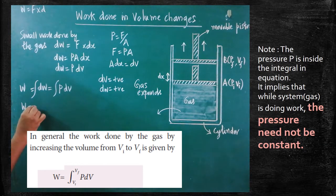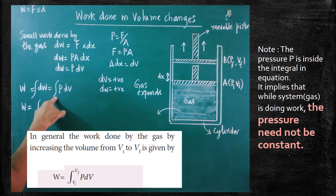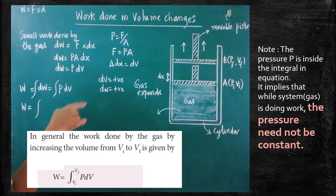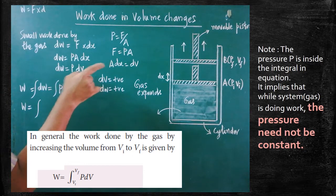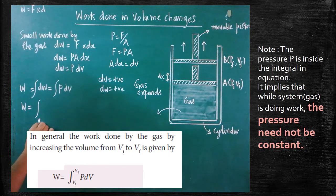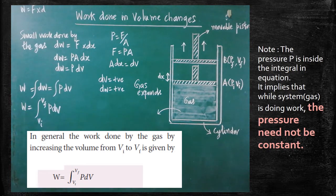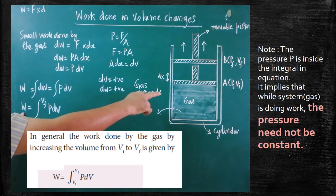So W is equal to — we have to substitute the limits. The limits available are the initial volume Vi and the final volume Vf. So W equals the integral from Vi to Vf of P dV. This is the expression from which we are able to calculate the total work done done by the gas on the piston.